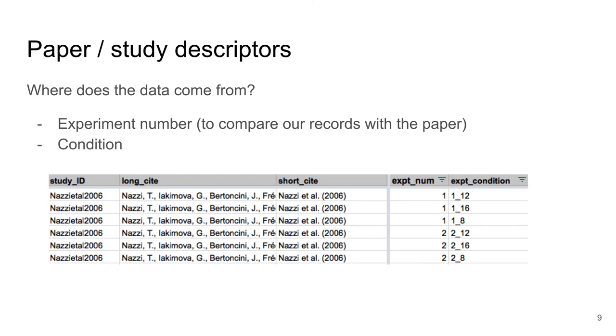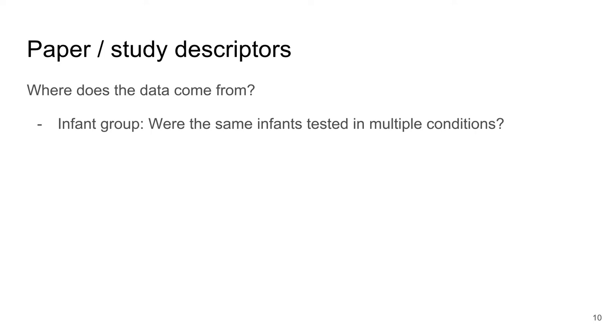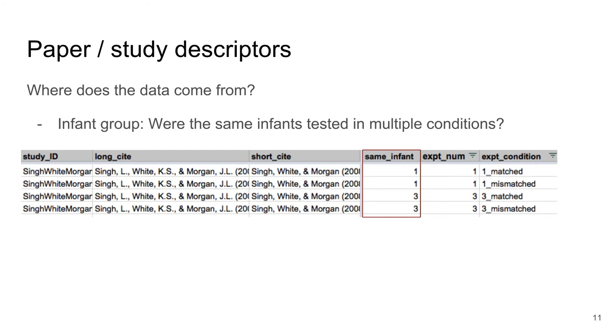Sometimes the same infants are tested in several experiments or conditions. The data is then not independent and we want to enter this information later in our statistical models. We therefore add a column coding whether infants belong to the same group. In this example, infants were tested in two conditions. We can code this with numbers or a string. The label just has to be the same when the same infants are tested and different when this is not the case.